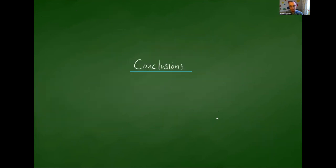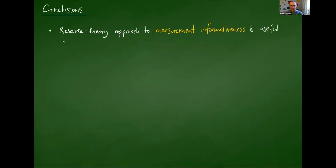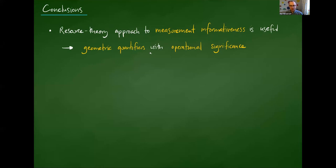To conclude: I've advocated a resource theory approach to measurement informativeness, and I hope to have convinced you it's an interesting way of looking at this old problem. The geometric quantifiers — robustness and weight — now have clear operational significance: the robustness quantifies the maximum advantage in state discrimination, and the weight quantifies the maximum advantage in state exclusion. I'm very happy to now better understand the operational significance of weight-based quantifiers.